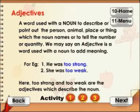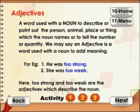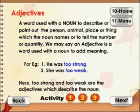We may say an adjective is a word used with a noun to add meaning. For example, he was too strong, she was too weak. Here, too strong and too weak are the adjectives which describe the noun.